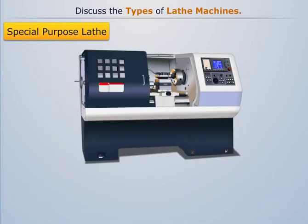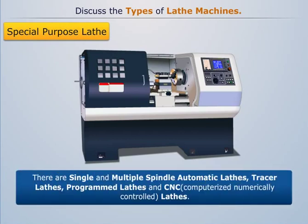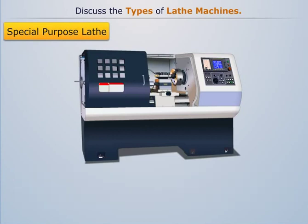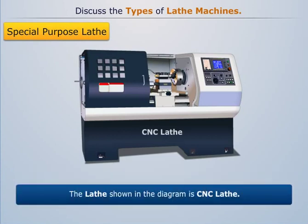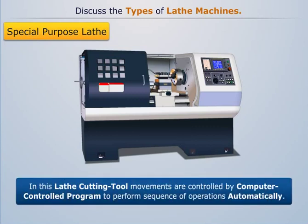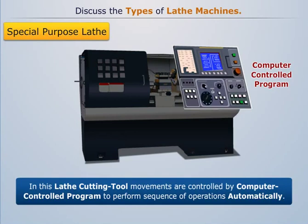There are different kinds of special purpose lathes depending on their purposes. These include single and multiple spindle automatic lathes, tracer lathes, programmed lathes, and CNC lathes. The lathe shown in the diagram is a CNC lathe, in which cutting tool movements are controlled by a computer control program to perform a sequence of operations automatically.